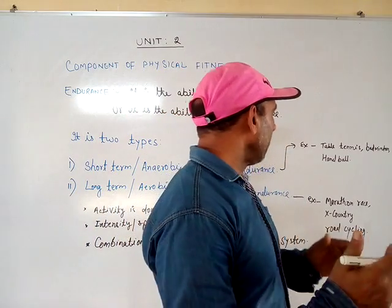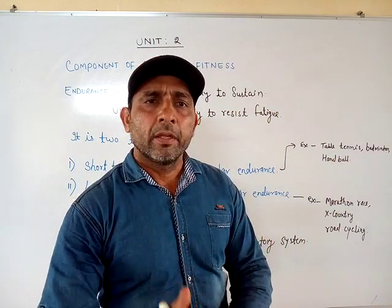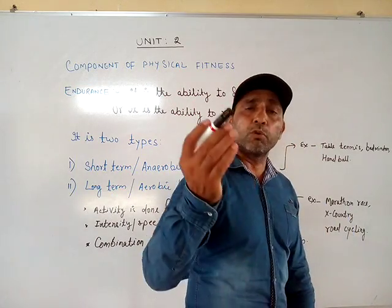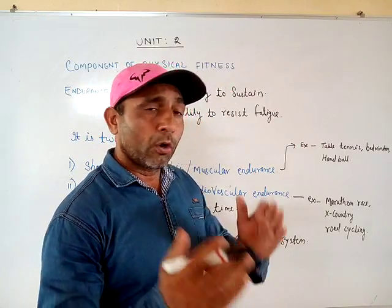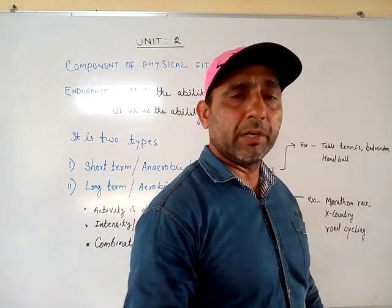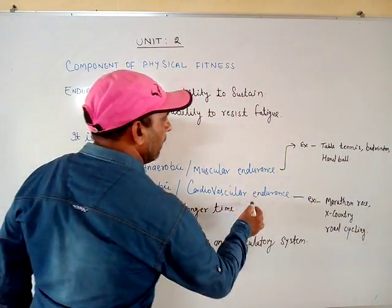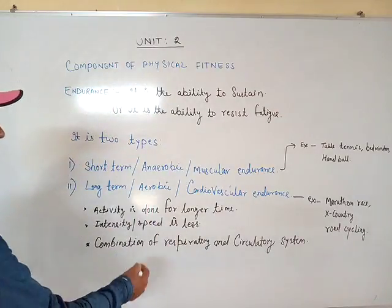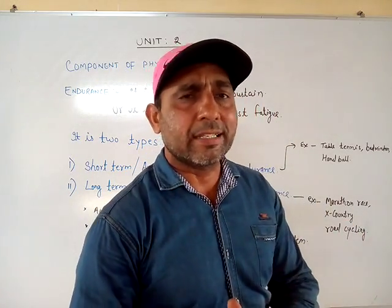Activities like a 200-meter sprint, 50-meter freestyle swimming, table tennis, badminton, and handball need anaerobic endurance. Whereas for a marathon race of 42 kilometers, cross-country running, or road cycling — activities lasting 30 to 50 minutes — long-term aerobic or cardiovascular endurance is required, where both the respiratory and circulatory systems are working together in combination.